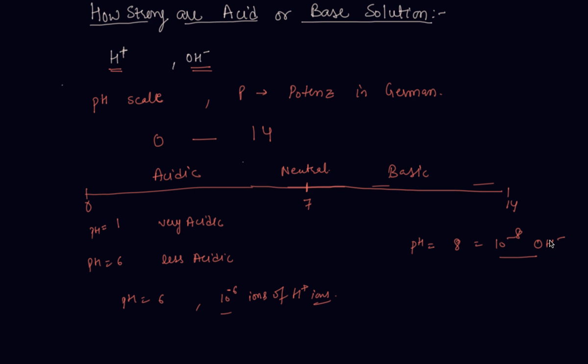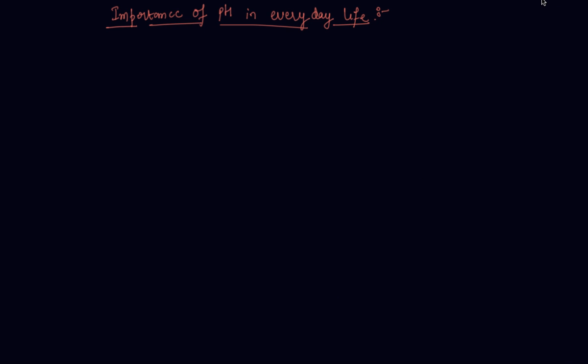So now we will discuss about importance of pH in our everyday life. All plants and animals are pH sensitive and our human body works within pH range of 7.0 to 7.8. Living organisms can survive only a narrow range of pH which is 7 to 7.8.